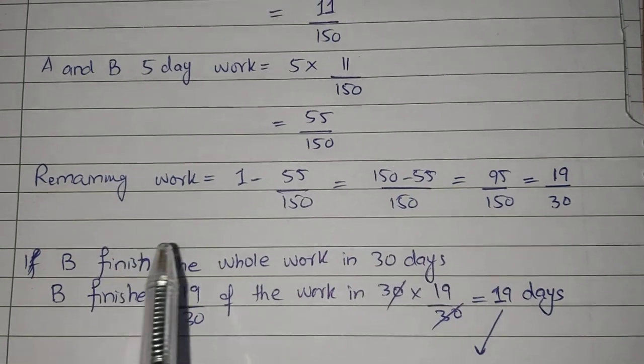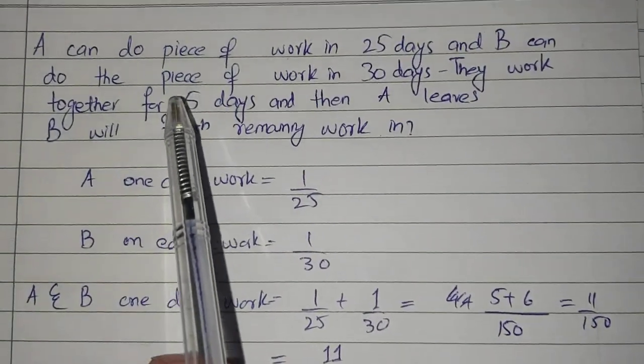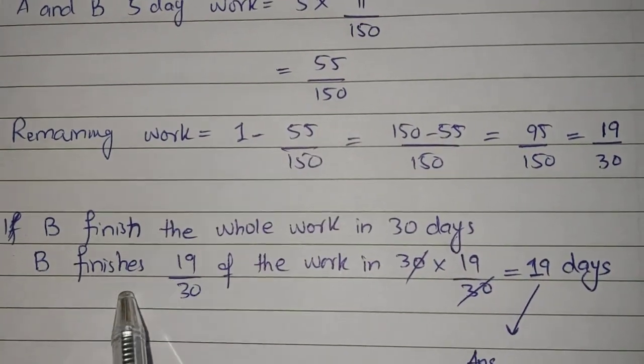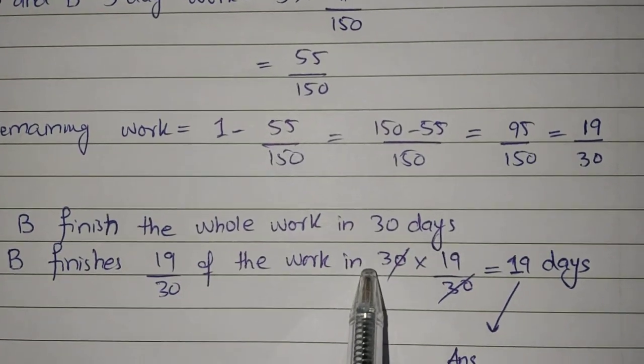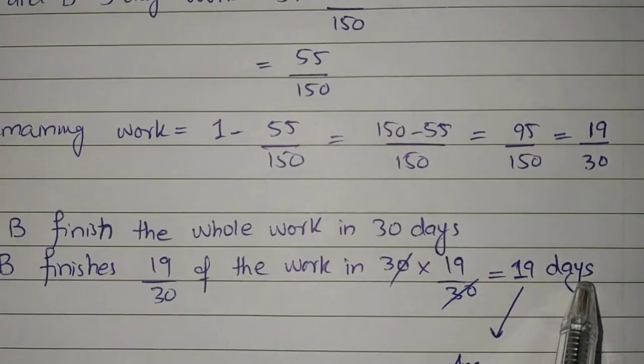Now B finishes the whole work in 30 days. Let's see, B finishes the whole work in 30 days. So B finishes 19/30 of the work in 30 times 19/30. The answer is 19 days.